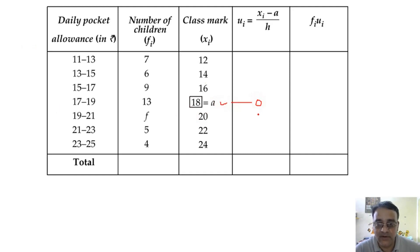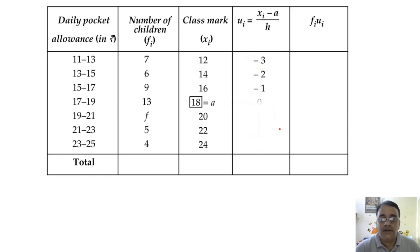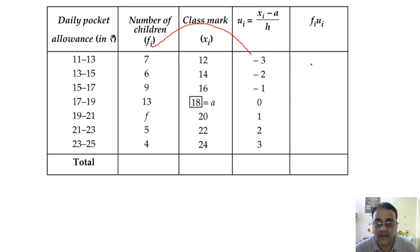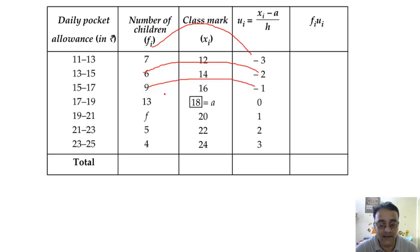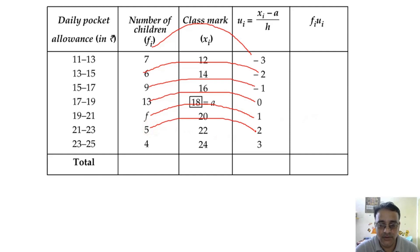We write 0 against 18, then 1, 2, 3 going down and minus 1, minus 2, minus 3 going up for the u column. Now for f×u: 7×(−3) = −21, 6×(−2) = −12, 7×(−1) = −7, 9×(−1) = −9, 13×0 = 0, f×1 = f, 5×2 = 10, 4×3 = 12.